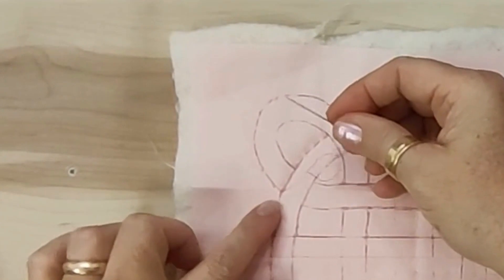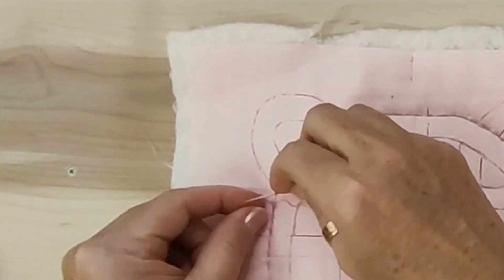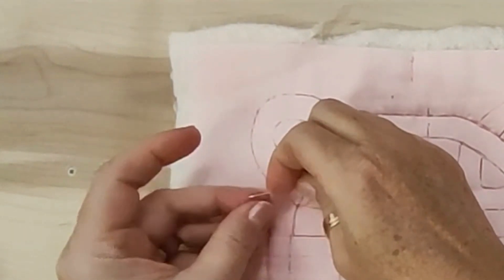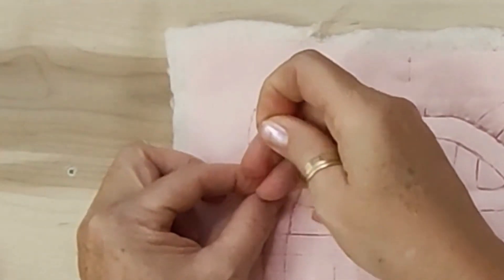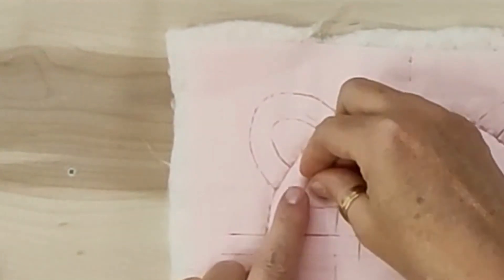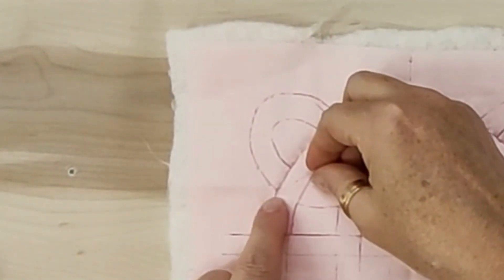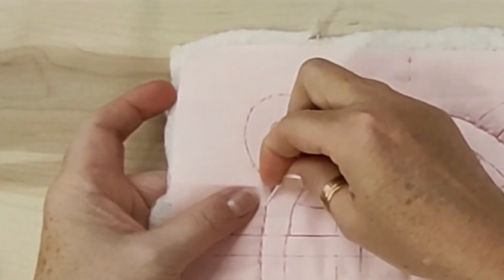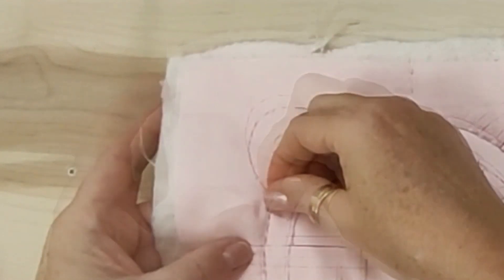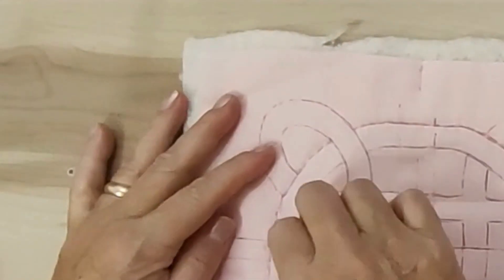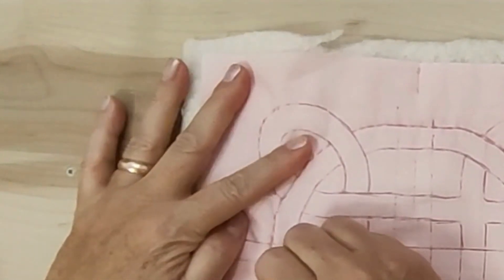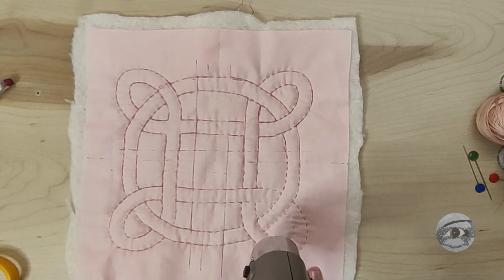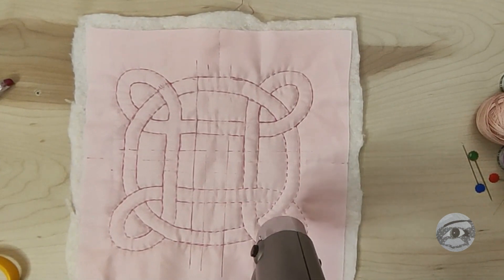The final knot is made by making three loops around the needle and pulling it through to the back. Taking action and being consistent are essential ingredients for a good hand quilt.